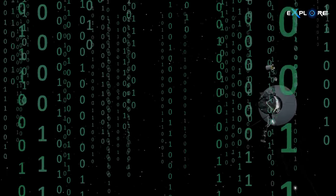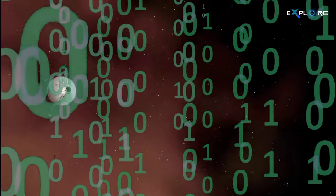Voyager 1, the farthest human-made object from Earth, is currently transmitting a repetitive sequence of ones and zeros, causing confusion among scientists at NASA.